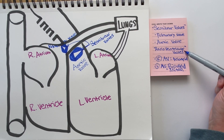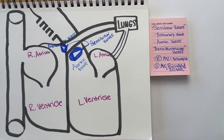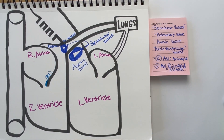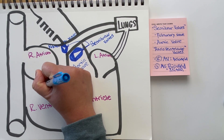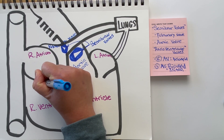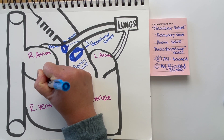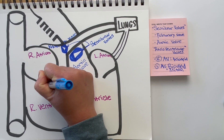Next we have our atrio-ventricular valves. They're called atrio-ventricular because these valves separate the atrium from the ventricles. You'll find your right AV valve on the right side of the heart. Our right AV valve is also called the tricuspid valve because it has three cusps that create this valve. This tricuspid valve separates your right atrium from your right ventricle. It allows blood to flow from the right atrium into the right ventricle, and it prevents back flow of blood from your right ventricle back into your right atrium.